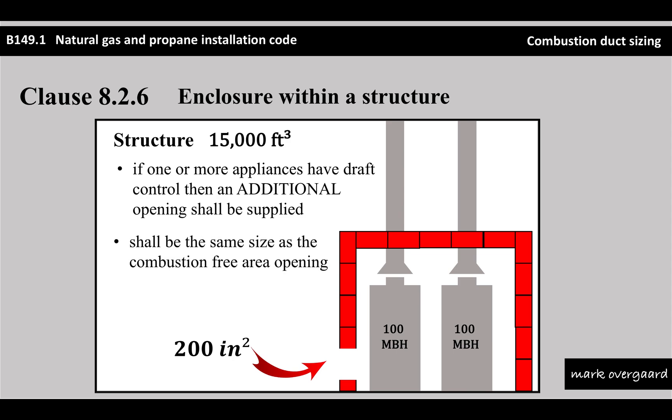So we get that flue gas spillage - that's a problem. What we need is that additional opening, and it's the same size as the combustion-free area opening down below: 200 square inches. What that will do is create a nice convection current within that whole system and take those products of combustion out. And because the structure is leaky, it will take those out of the whole structure as well.